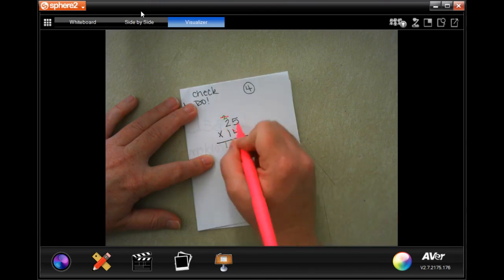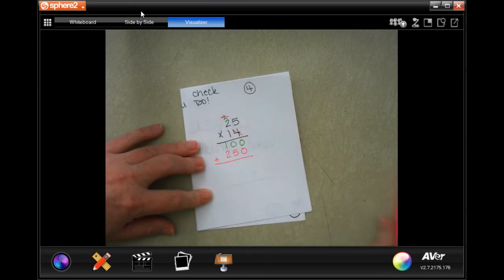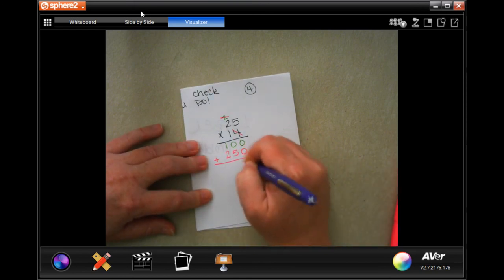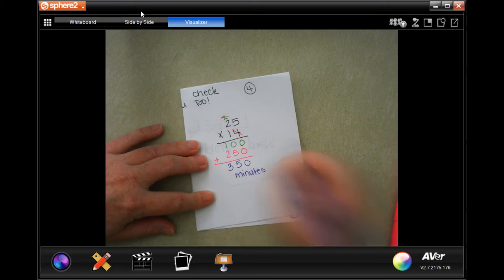And 1 times 25 is 25. So, I'm just going to go ahead and do that. Now, I need to add those up. 0, 5, 3, 350 minutes.